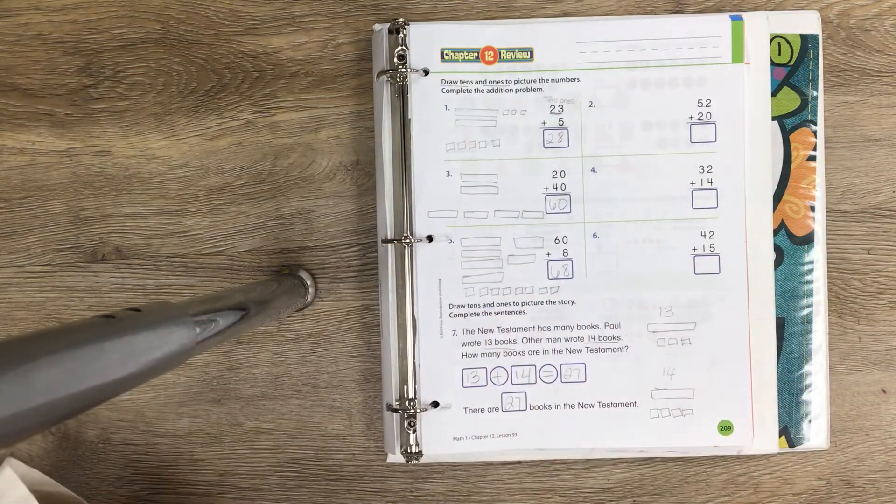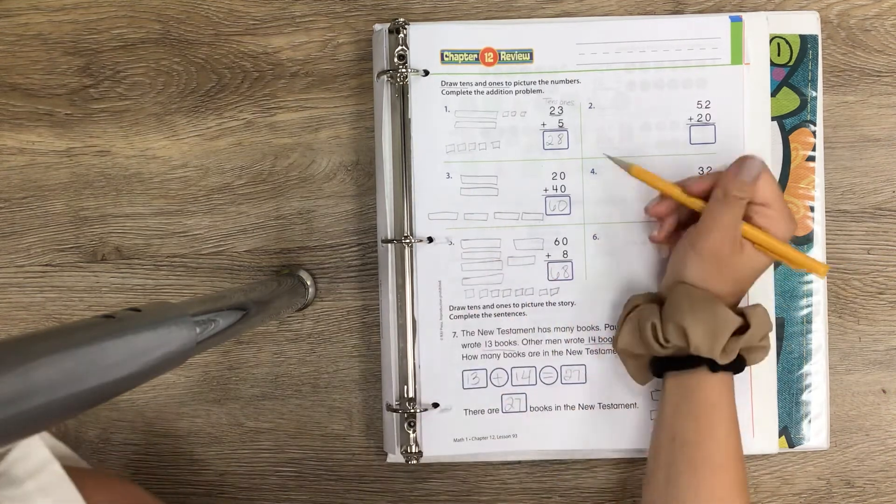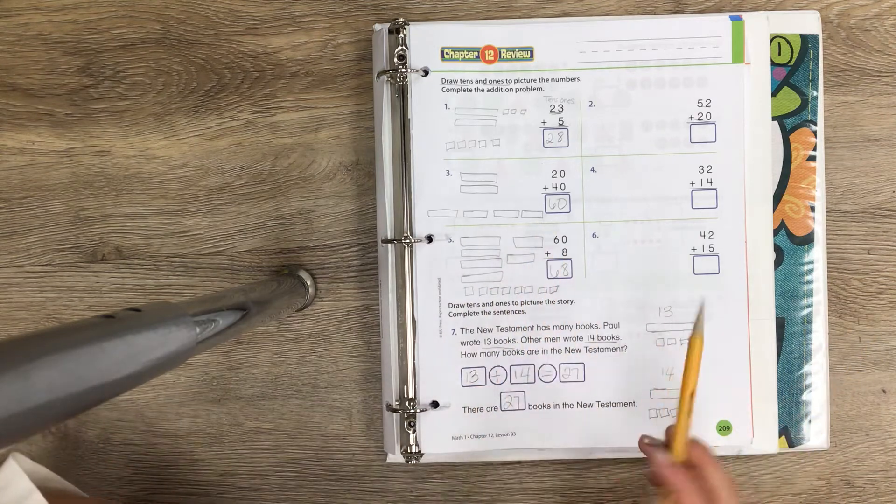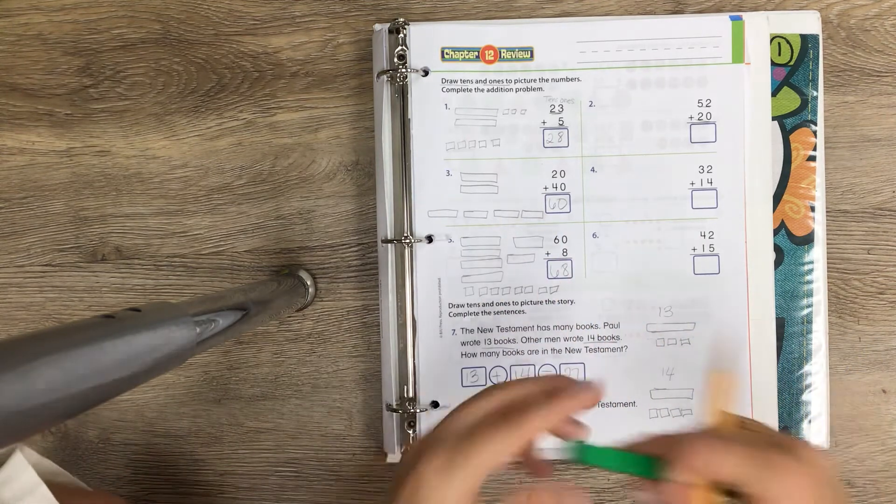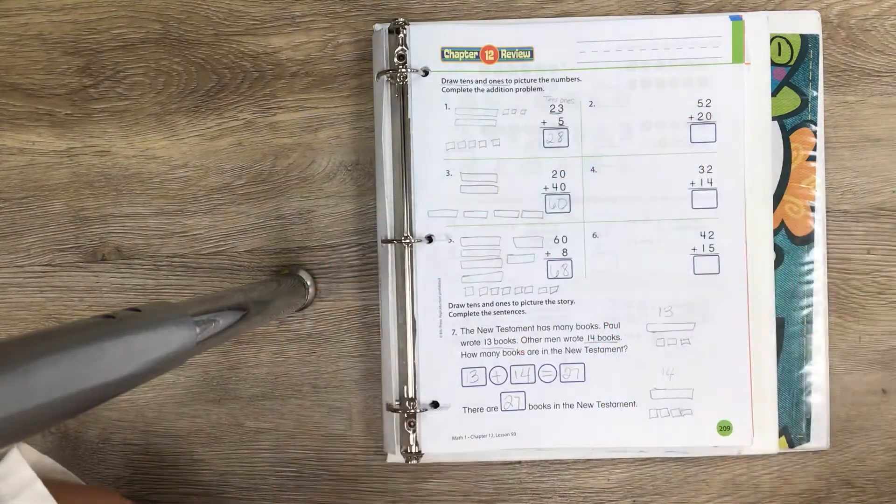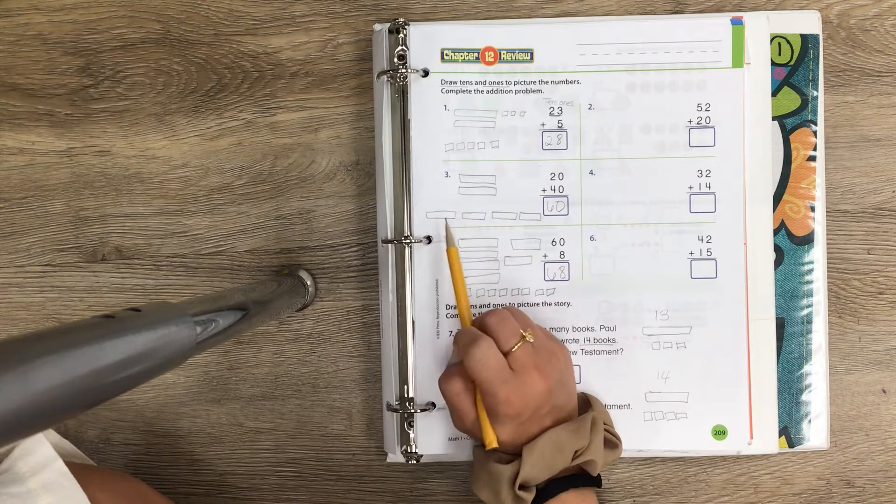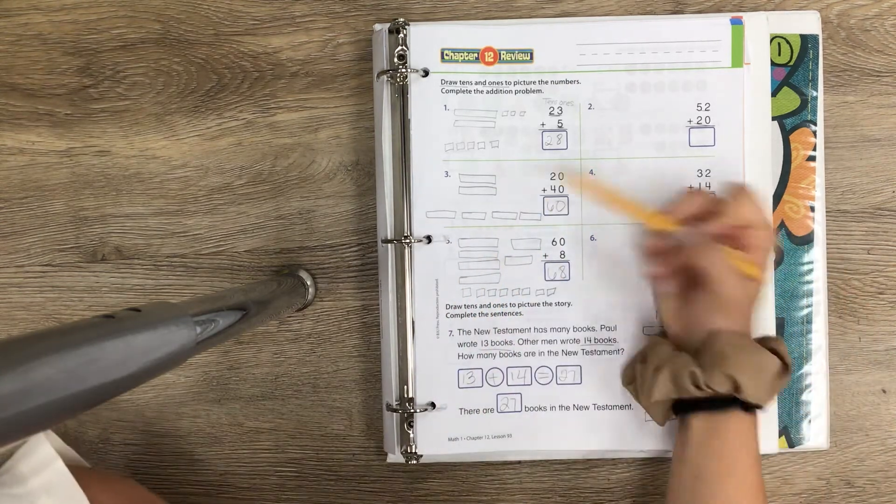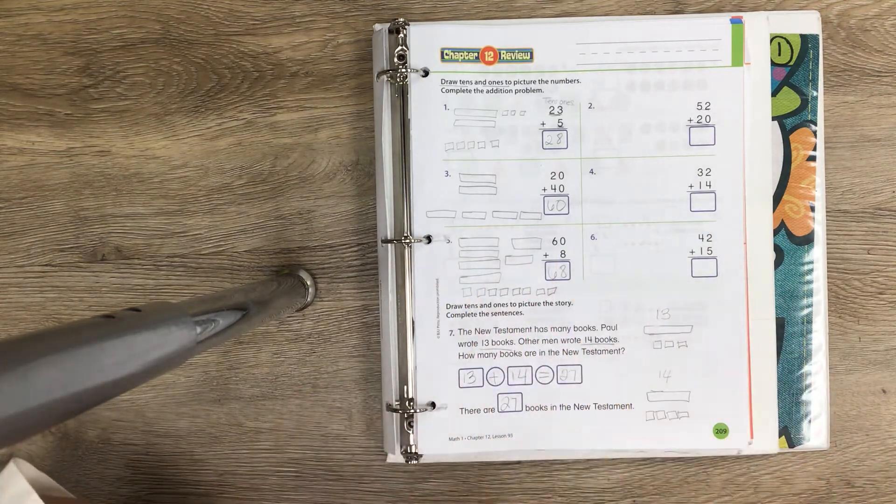For number 3, I did the same thing. I made 20: 10, 20. Then they wanted us to make 40, which is 10, 20, 30, 40. Remember, each of these rectangles equals 10. Then they wanted us to add them all together and I got 10, 20, 30, 40, 50, 60. So I made 20, then I made 40, and I put them all together and I got 60.